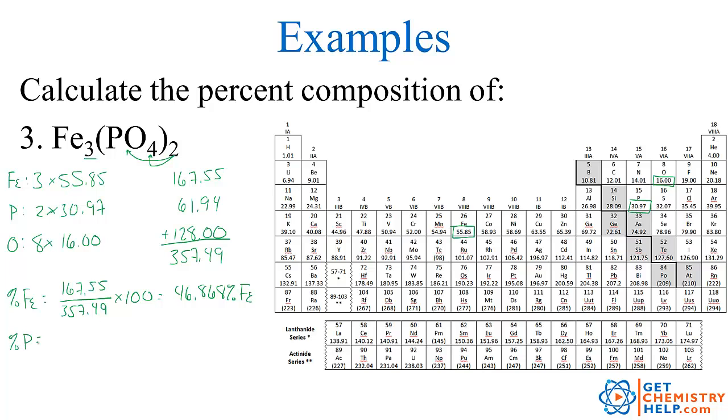The percent of phosphorus, the total mass of phosphorus was 61.94, so 61.94 divided by 357.49, and again times 100, tells me it's 17.33% phosphorus.